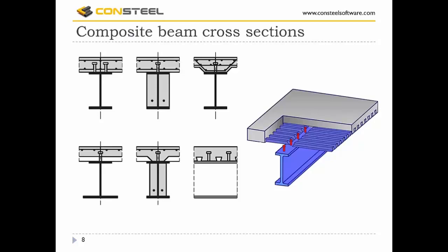Here are some typical composite beam cross-sections. The upper left pictures show composite beams with constant slab thickness, and the upper right picture shows a haunched cross-section. On the lower line, composite cross-sections with profiled steel sheeting can be seen. The direction of these profiles can be parallel or perpendicular to the steel cross-section, and it can also be continuous or non-continuous at the top flange, which determines the calculation method.